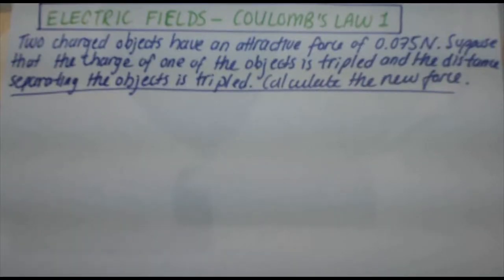Hey guys, let's do an electric fields problem on Coulomb's law. Two charged objects have an attractive force of 0.075 newtons. Suppose that the charge of one of the objects is tripled and the distance separating the objects is tripled. Calculate the new force.